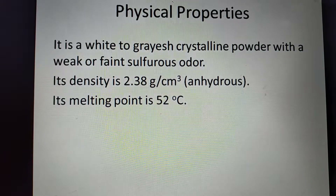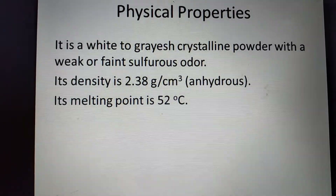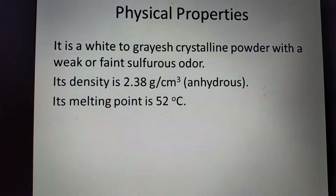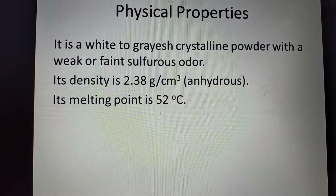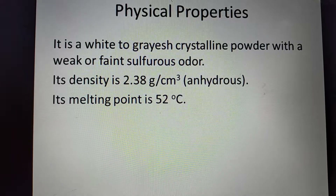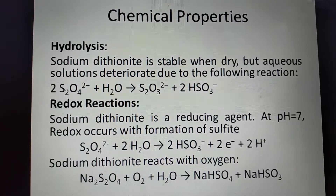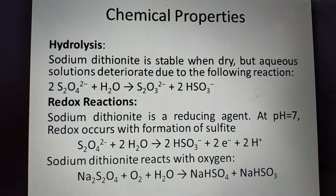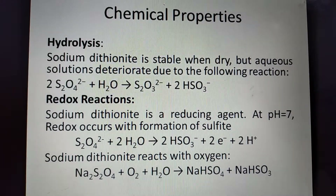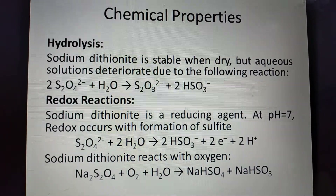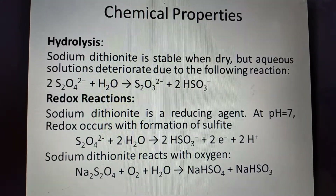Physical properties: sodium dithionite is a white to grayish crystalline powder with a weak, faint sulfurous odor. Its density is 2.38 g/cm³ (anhydrous) and its melting point is 52°C. Chemical properties — hydrolysis: sodium dithionite is stable when dry, but aqueous solutions deteriorate.